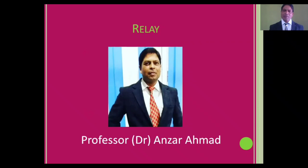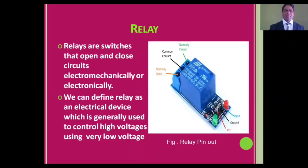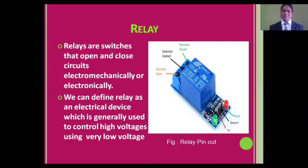Explaining what is a relay and how it works — relays are switches that open and close circuits electromechanically or electronically. This is one type of switch that is operated mechanically or electronically. We can define relay as an electrical device which is generally used to control high voltage using very low voltage.